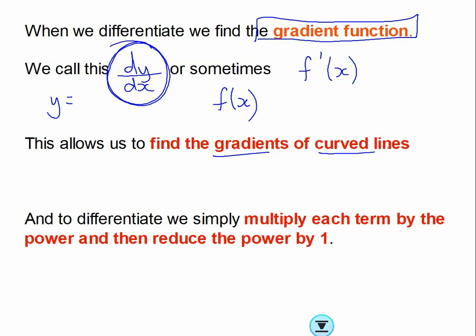And it's really important because it allows us to find the gradients of curved lines. Okay? We don't need it for straight lines because the gradient's constant, it's the m in mx plus c. And to differentiate, you've already been doing it. It's that simple. You just multiply each term by the power and then reduce the power by 1. So pause the video, write that down, and hit play when you're ready.